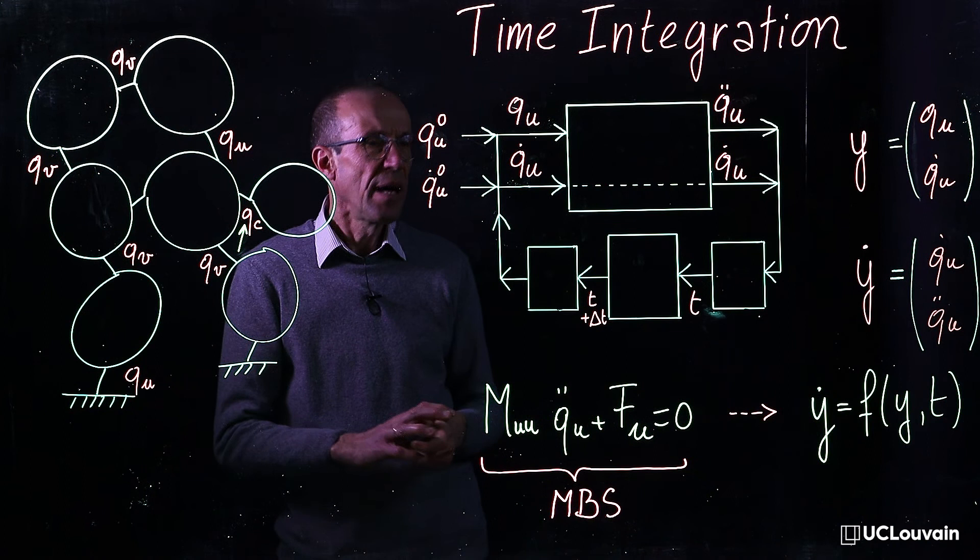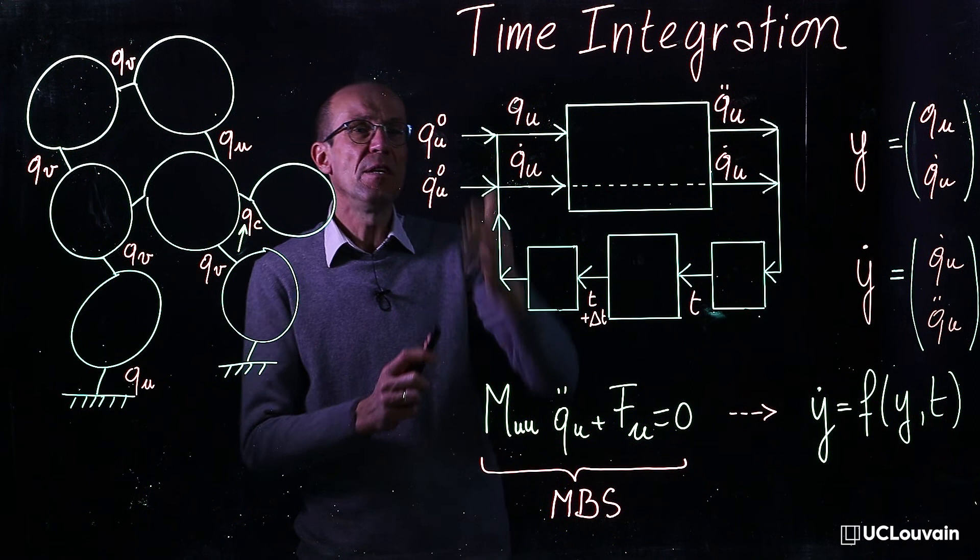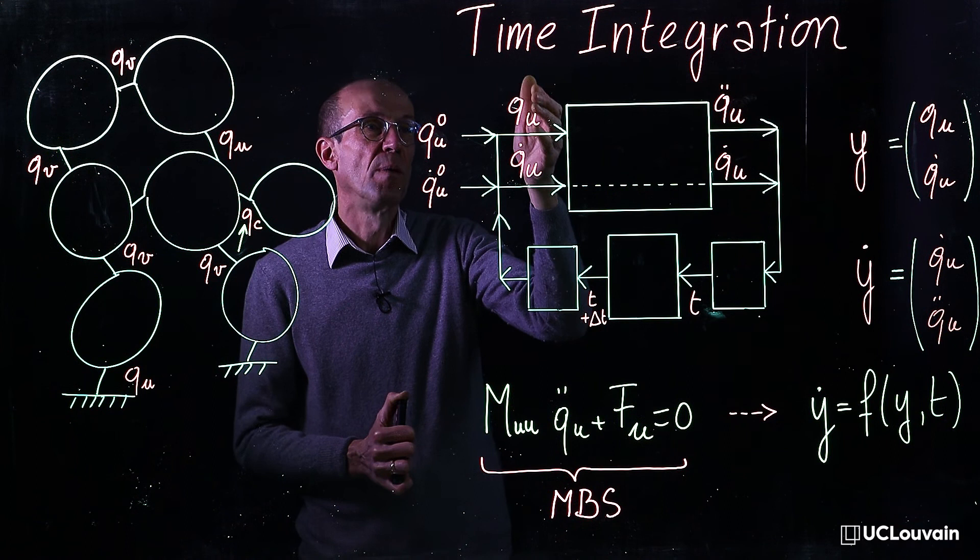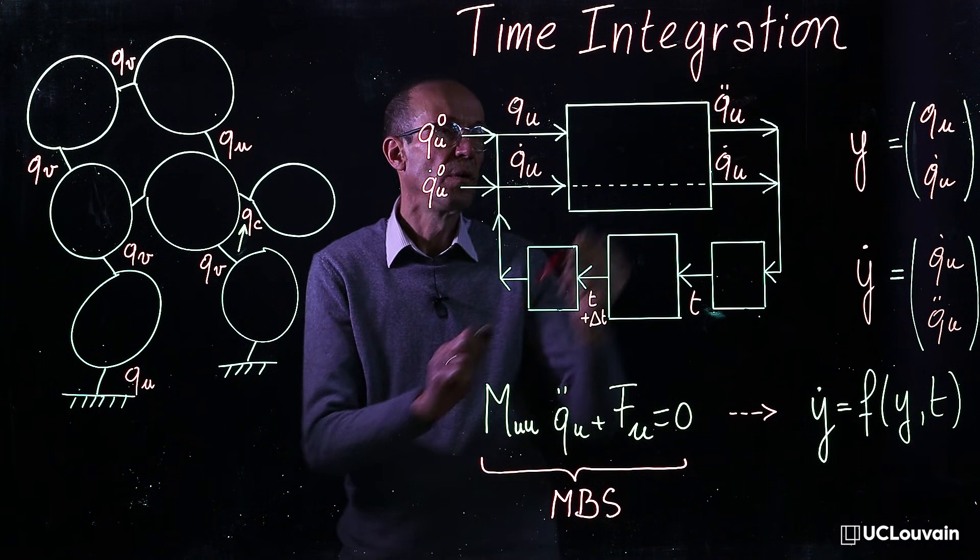The following flow sheet diagram summarizes the process. Starting from initial position and velocities of my system, or from position and velocities of the previous time step, the multi-body model can be computed.